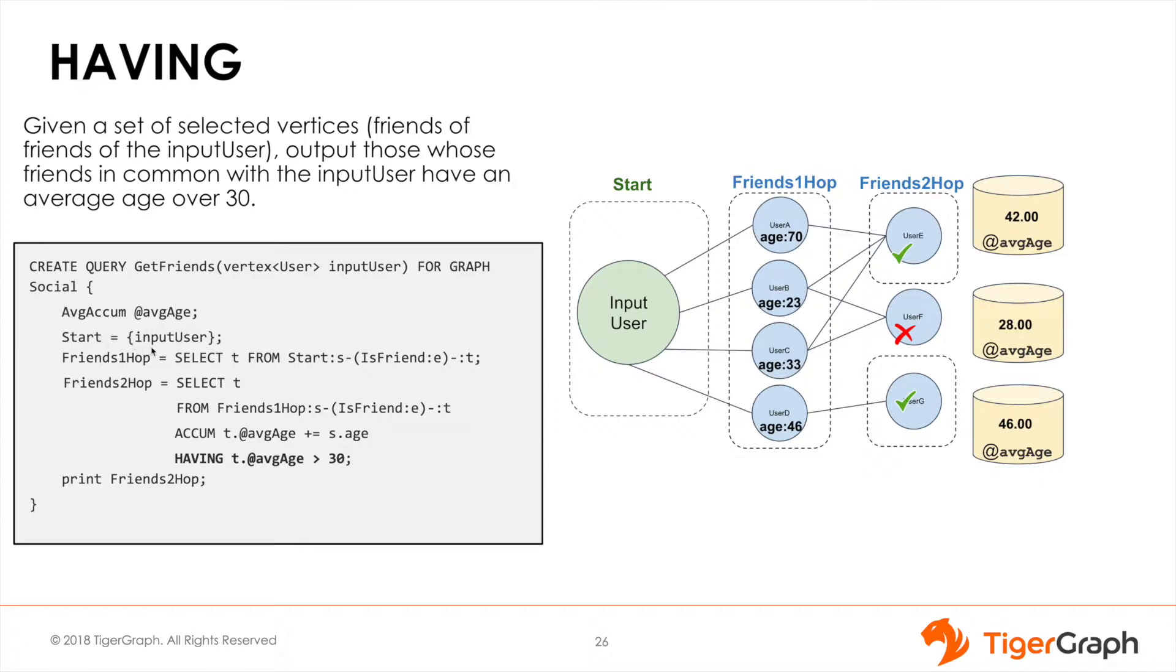We start at the input user vertex, and we traverse to all their friends, storing the result in FriendsOneHop. Then we traverse to all their friends, and accumulate the ages to the target vertices' average accumulator.